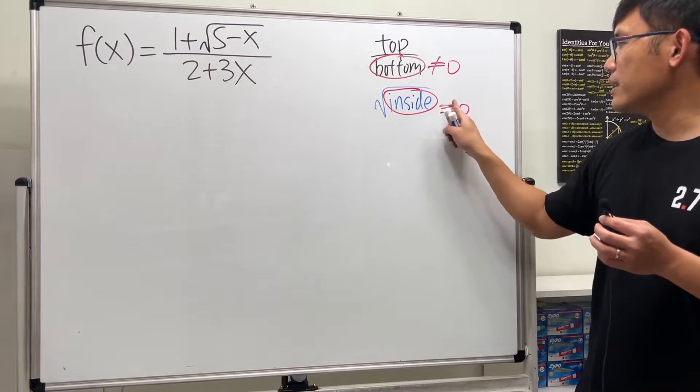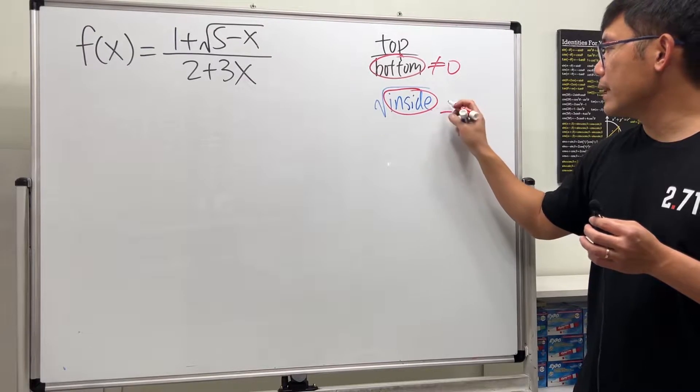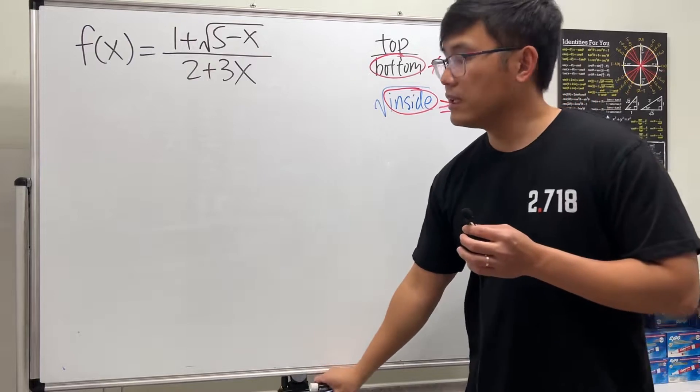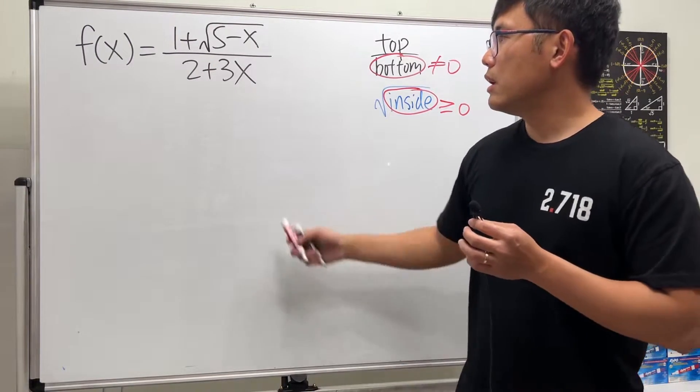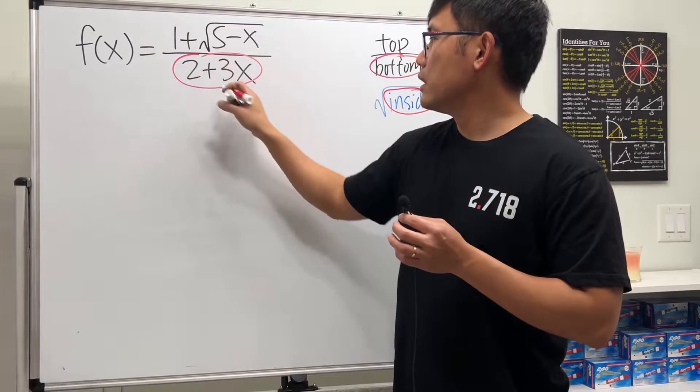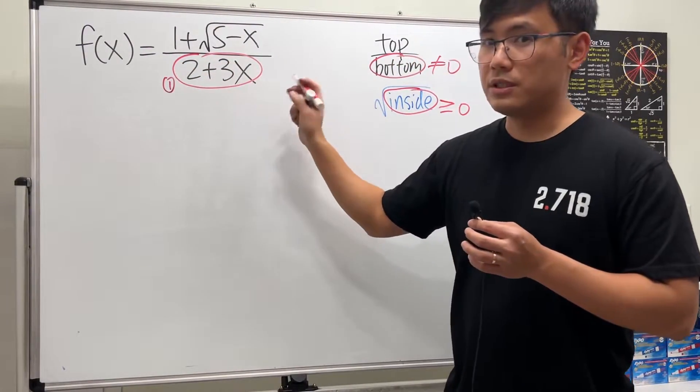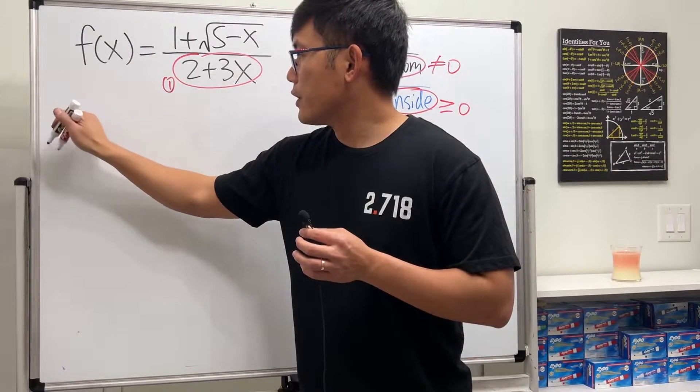Let's go ahead and take care of the first condition. Let's put the bottom right here. This is the first condition: we don't want it to be zero.